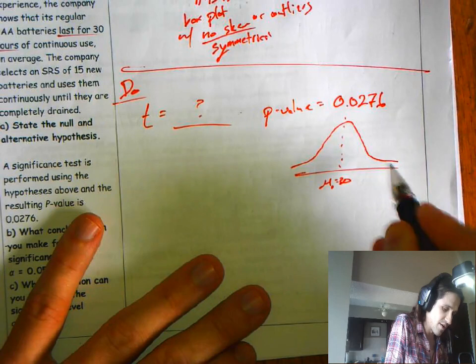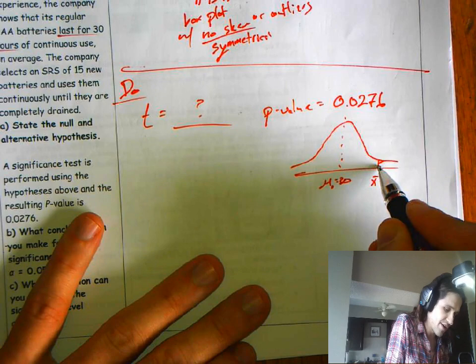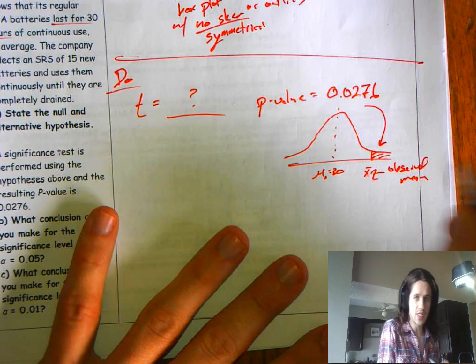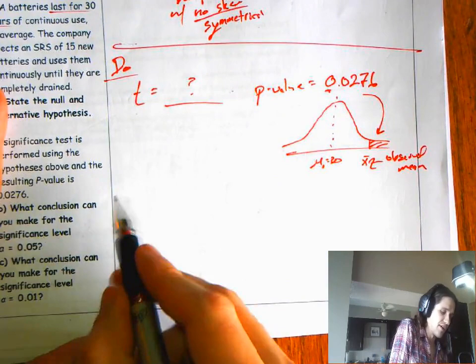Say we got some observed x-bar and the area above that is that 2.67%. So this is our observed mean. So it's higher than average. We would only get a result that extreme about 2.7% of the time if this was true. Conclude.